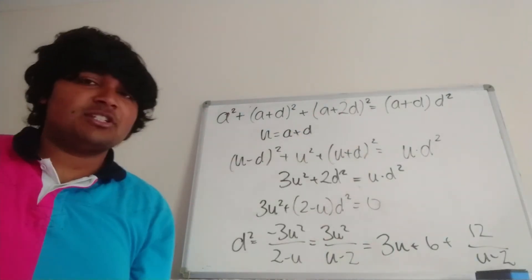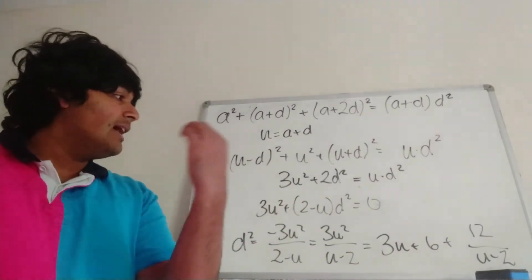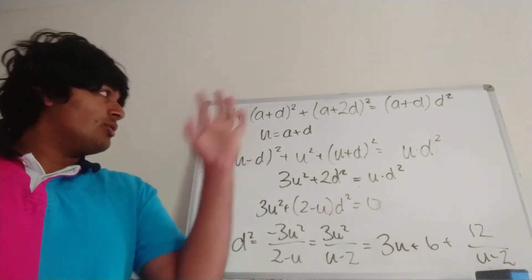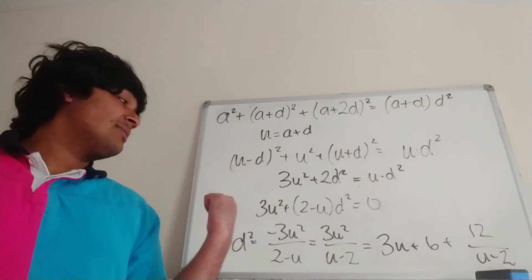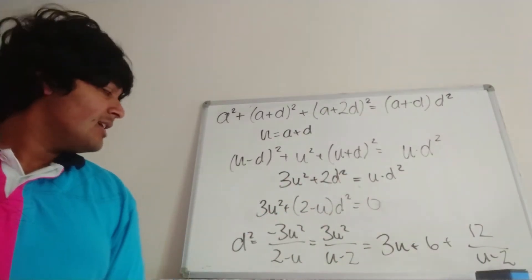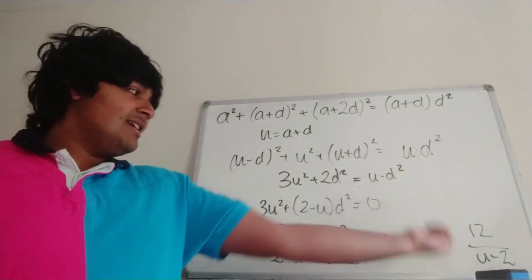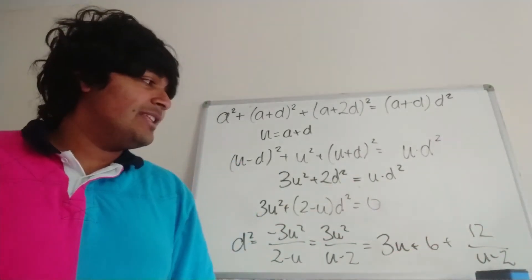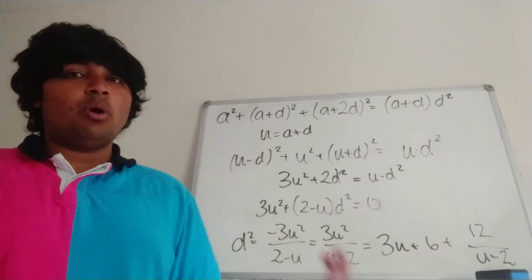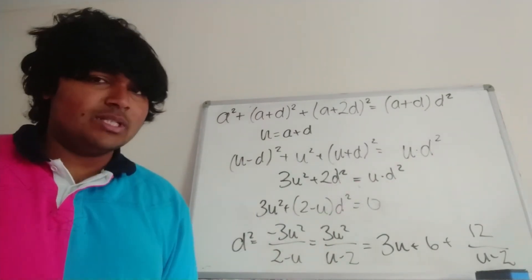Since u is just a plus d, and we're insisting that a and d are both integers, u is also an integer. We also need d to be an integer, so d squared is an integer. The left-hand side and right-hand side must both be integers. Since d squared is an integer, u is an integer, 3u is an integer, and 6 is an integer, this tells us that 12 over (u minus 2) must be an integer — so u minus 2 must be a factor of 12, positive or negative. We'll have to check some cases.